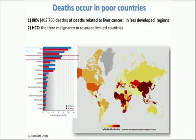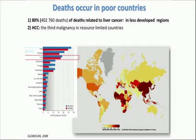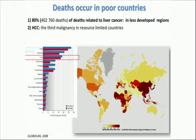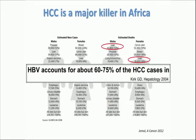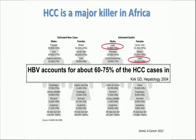These deaths occur in poor countries. As you can see in this map of liver cancer, the majority occurs in Africa and Southeast Asia. 80% of these deaths are observed in less developed regions. In this part of the world, liver cancer is the third malignancy in resource-limited countries. In Africa specifically, liver cancer is the leading cause of cancer death — the first malignancy in males and the second in females.